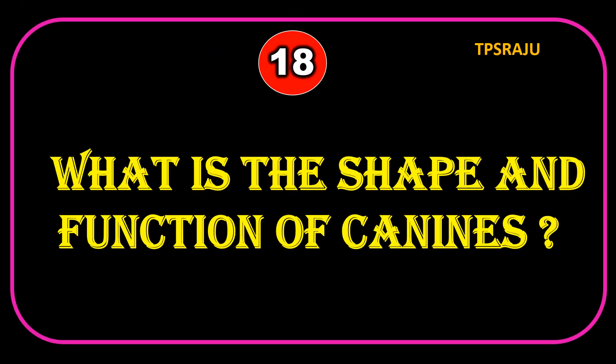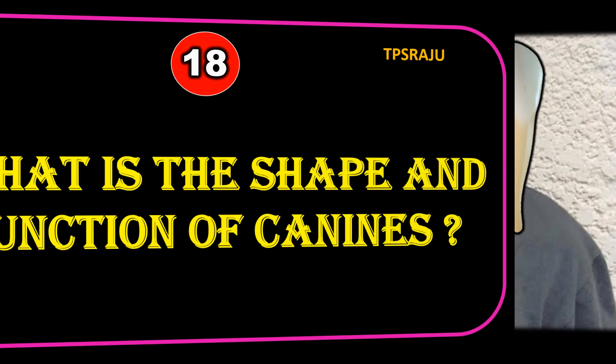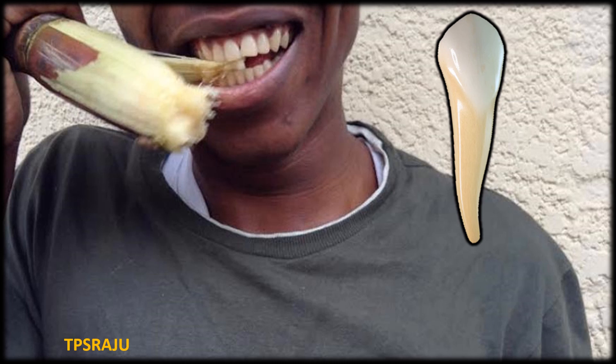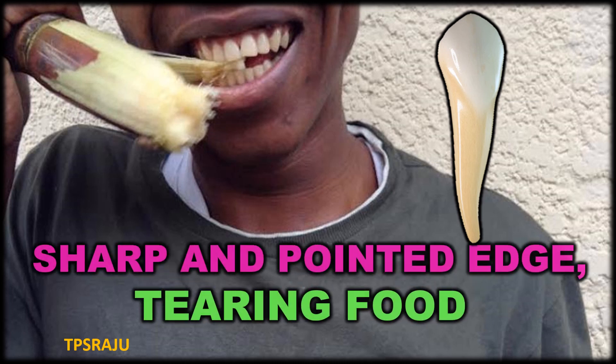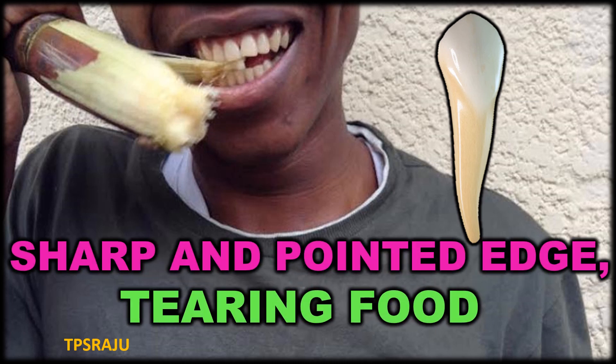What is the shape and function of canines? The shape is sharp and pointed edge, and the function is tearing food.